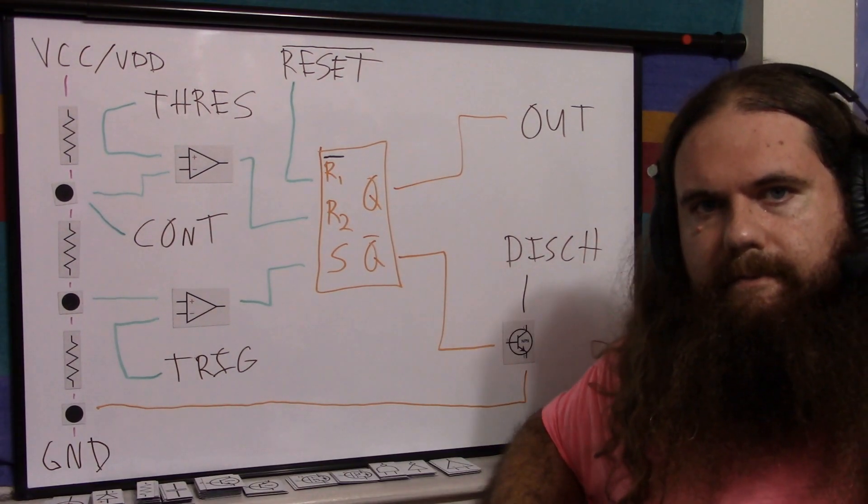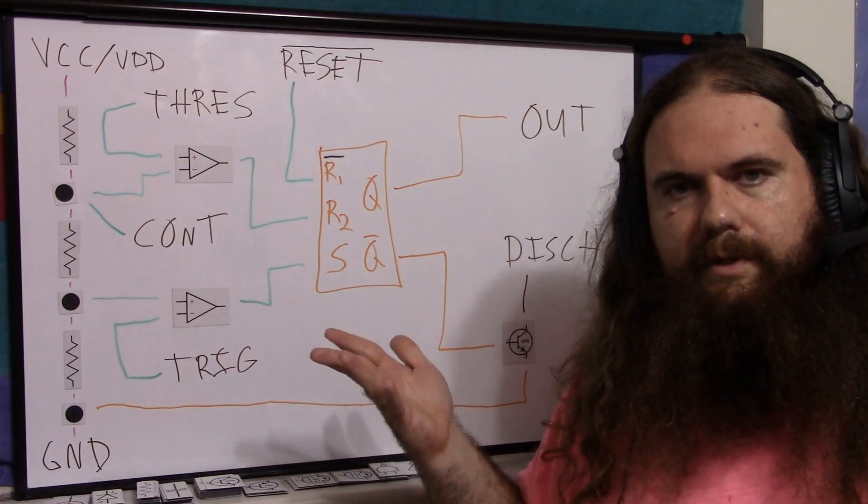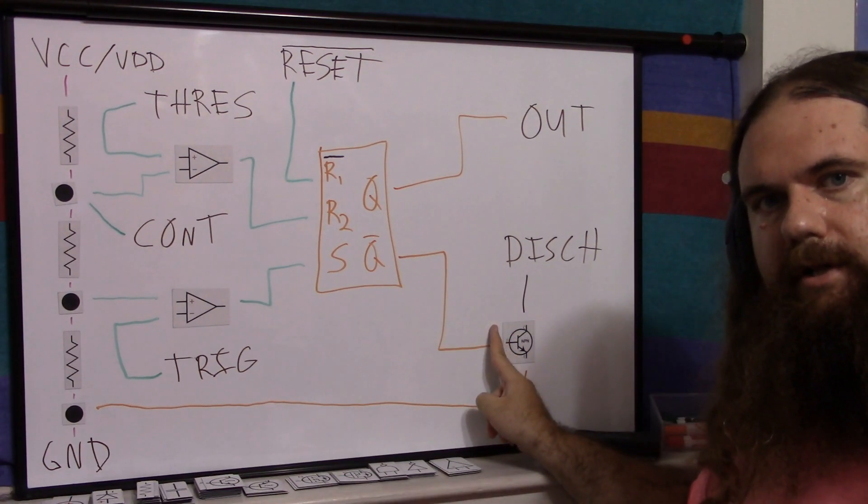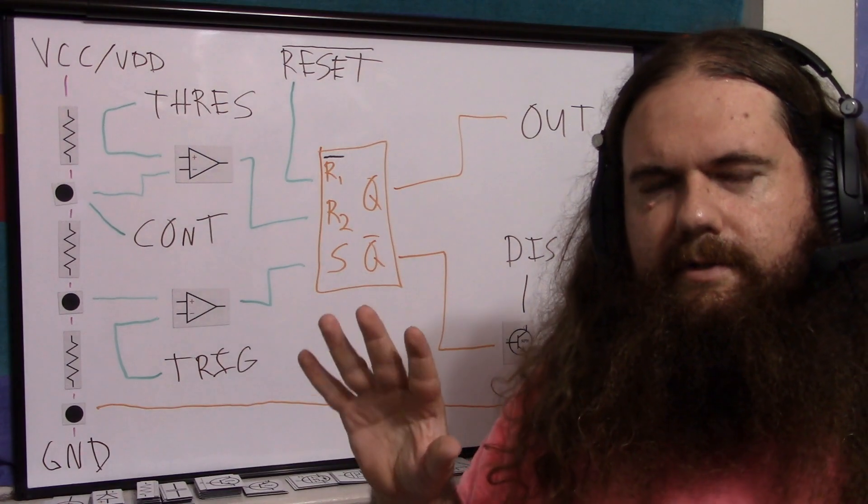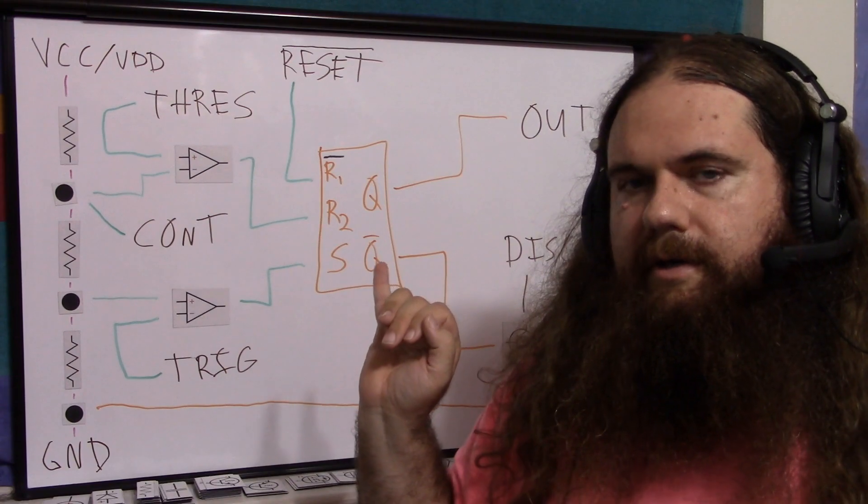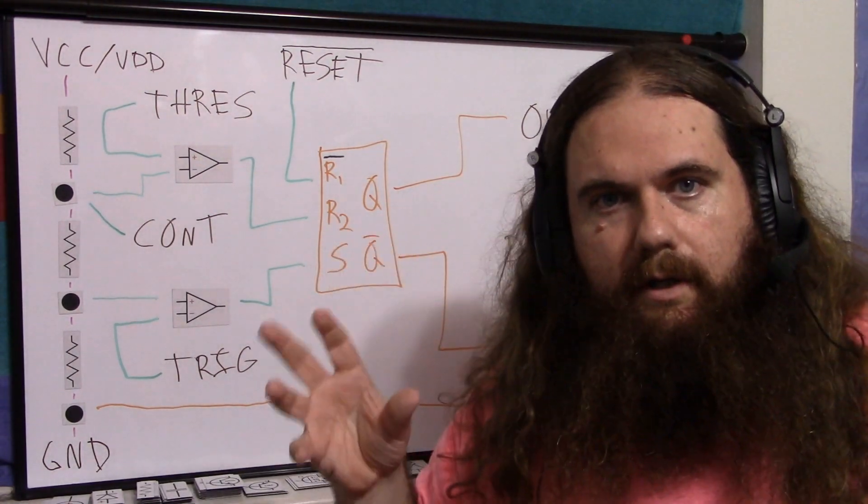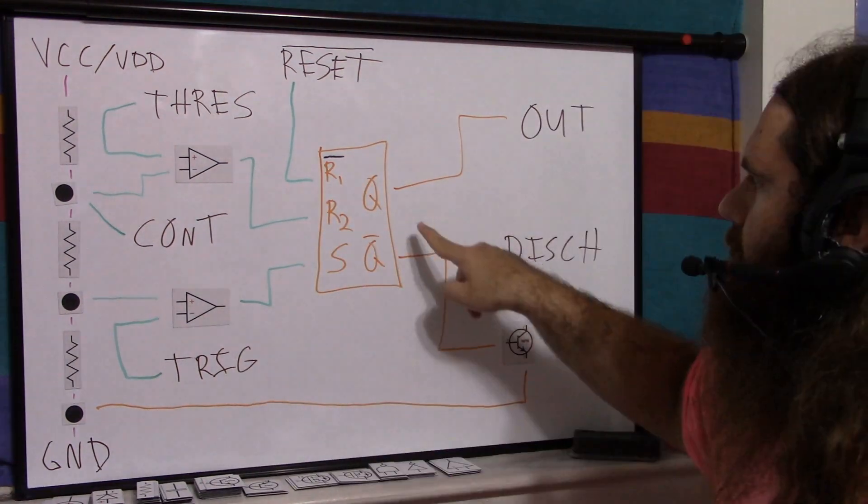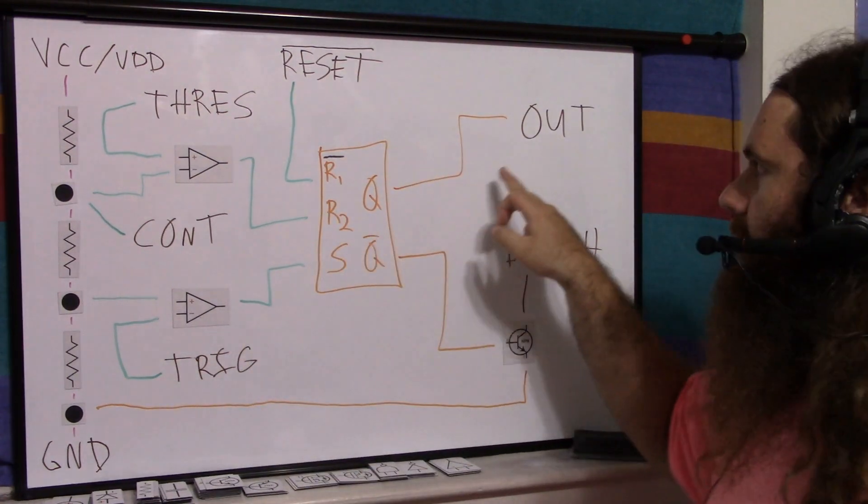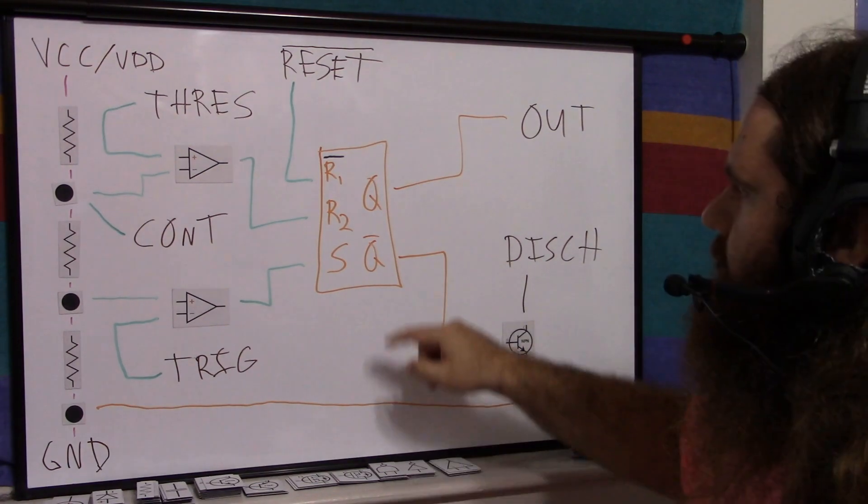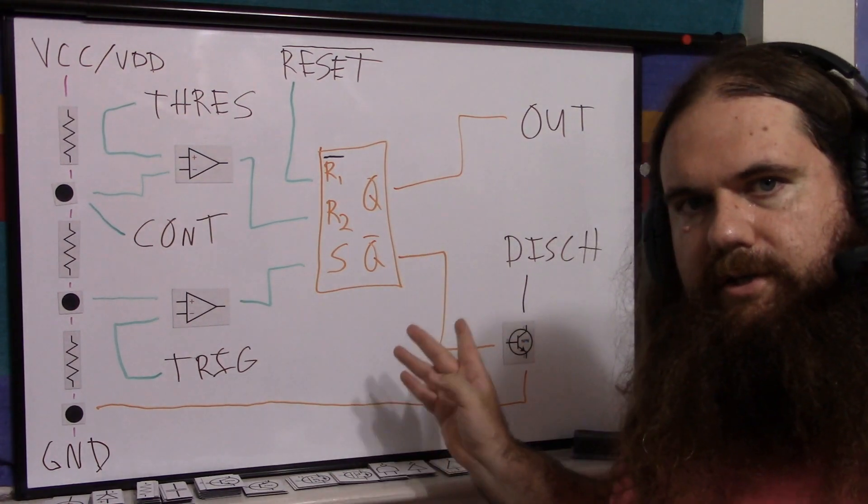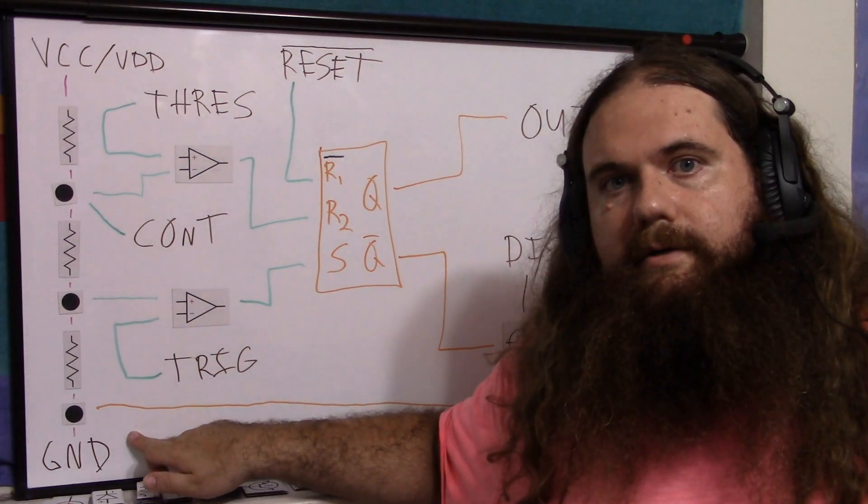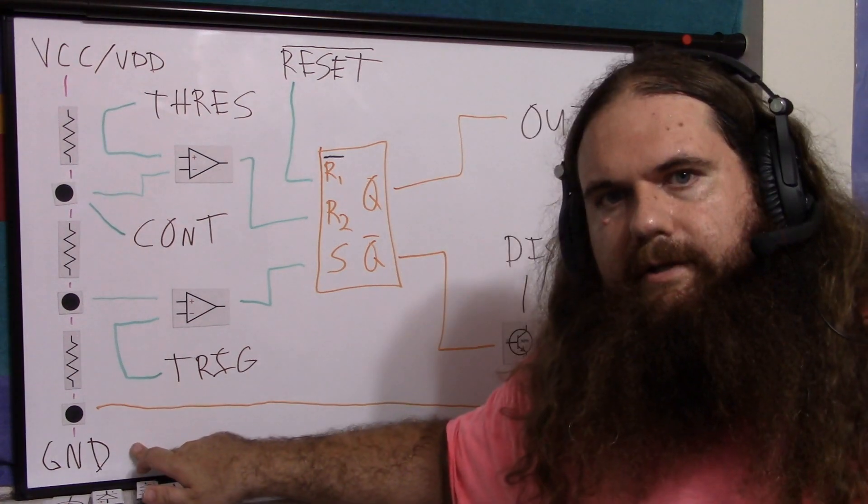The discharge transistor is what's called an open collector or open drain output. When the output is high, meaning the timer is active, this transistor is closed. It's not giving a low voltage, it's closed. So it's essentially a floating output. You don't want to hook up logic to discharge. The idea of discharge is you hook up a capacitor or a load to it that you want to be active and then just cut off. So it's not about a signal. It doesn't give a signal. It allows power through or not. When Q is low, when the timer is putting out a low signal, Q-not is high, so discharge opens. So when your timer is on and active, this discharge transistor is closed. When the timer stops, then the transistor opens and your discharge will discharge. That's why it's called discharge. It's meant to discharge a capacitor.